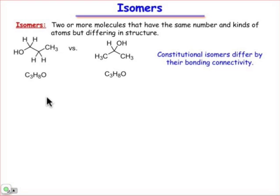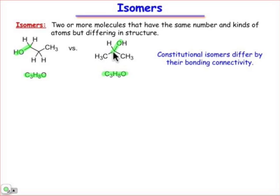Isomers are structures that have the exact same number of each kind of atom. So C3H8O on the left and C3H8O on the right have the same number of carbons, hydrogens, and oxygens, but we can very easily recognize them as different. Their difference has to do with how the atoms are connected together — a primary versus a secondary hydroxyl group clearly makes these different kinds of molecules. They differ according to bonding connectivity, and those kinds of isomers are known as constitutional isomers.